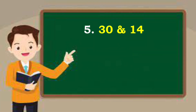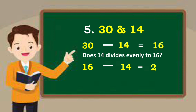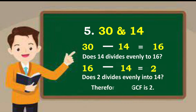30 and 14. Subtract: 30 minus 14 is equal to 16. 14 is the lowest. Does 14 divide evenly into 16? No. Then subtract 16 and 14: 16 minus 14 is 2. Does 2 divide evenly into 14? Yes. Therefore, 2 is the GCF.